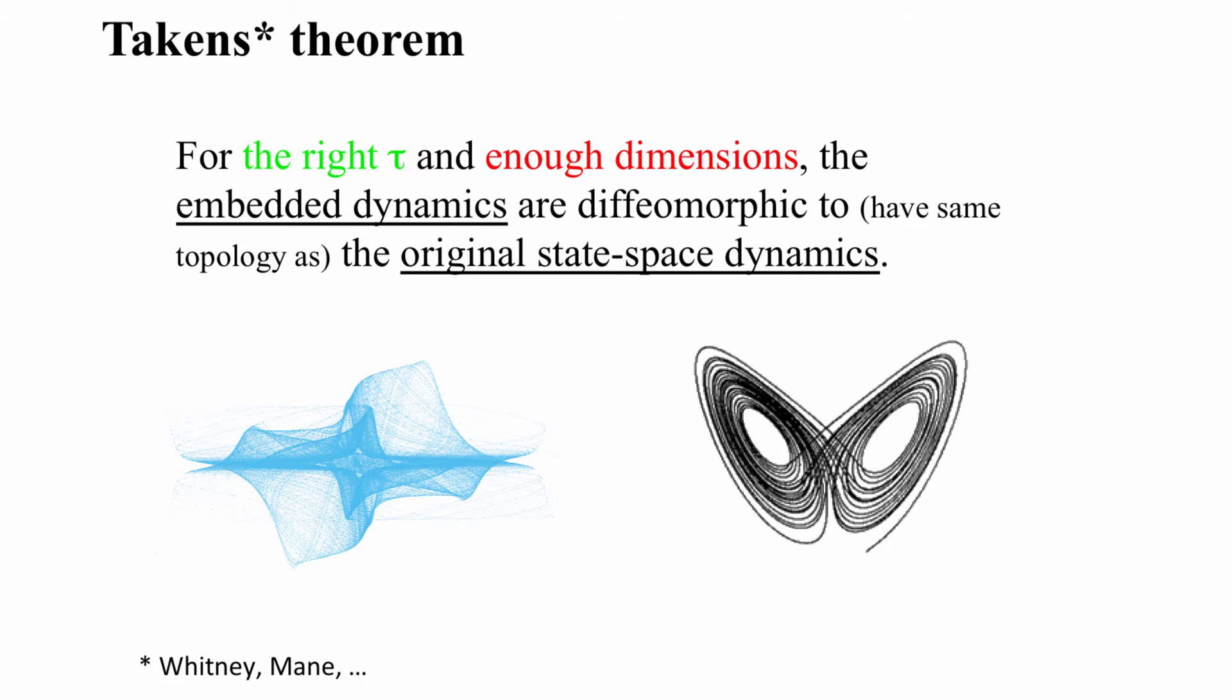What we will use, and what is the standard technique in the literature, is the method of false neighbors. The basic idea behind this is that if you have not allowed enough dimensions for the attractor to unfold, there will be crossings in the dynamics.